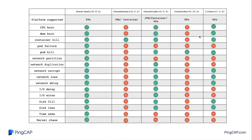We've also ported Jepsen from Clojure to Go, and we call the project TiPocket — spelled T-I-P-O-C-K-E-T — at PingCAP. Because we don't like the JVM or writing Clojure, which is a hard language to write. It's essentially the same functionality as Jepsen ported to Go, and you can check it out.